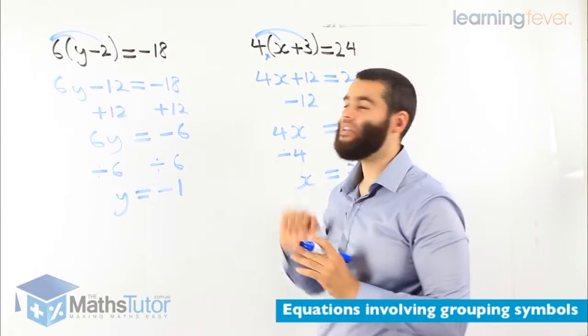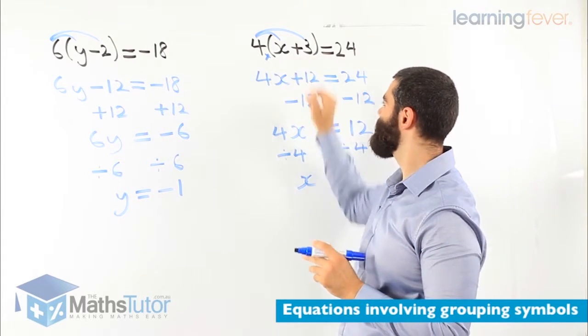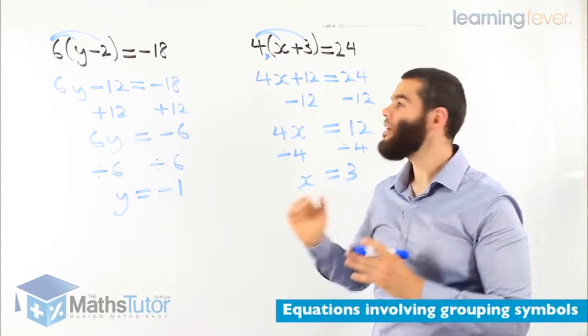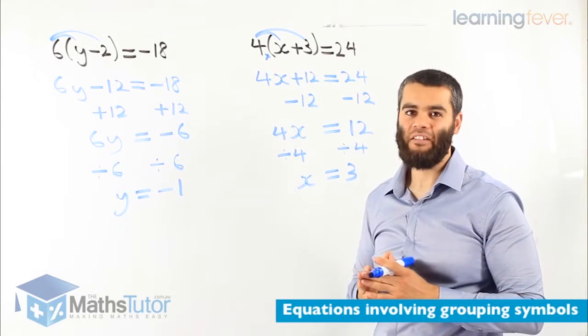So our answer is y equals to negative 1. So first, what do we do? We actually expand. When we see the brackets, the grouping symbols, we expand first. And then we complete our equation as normal.